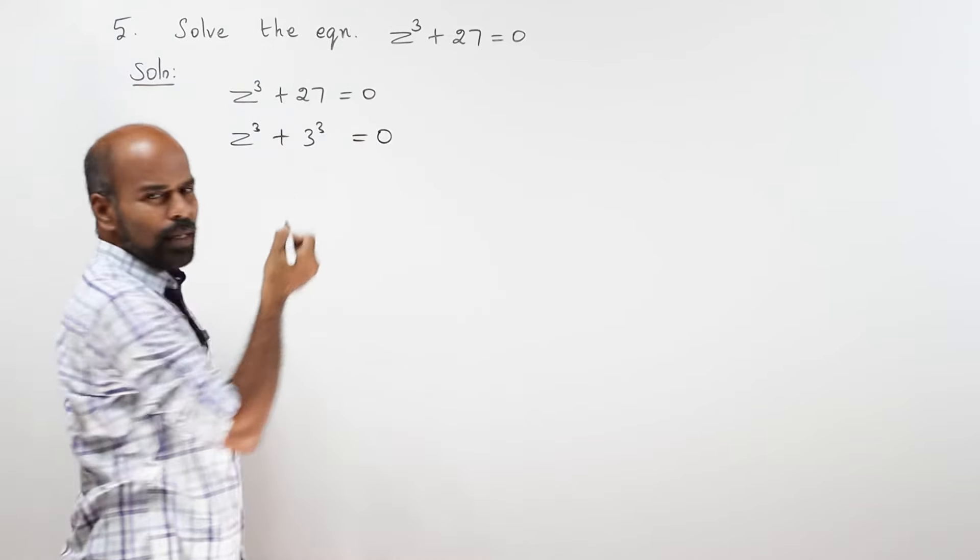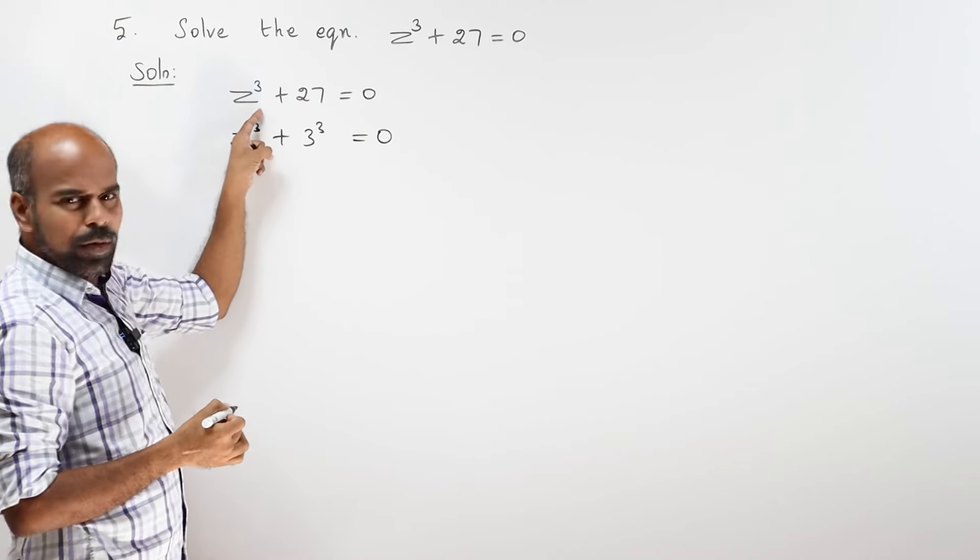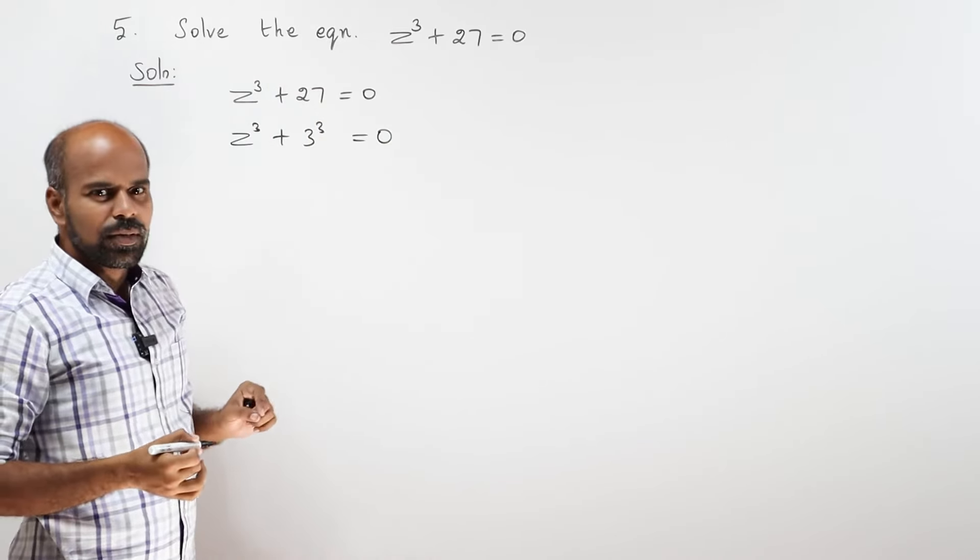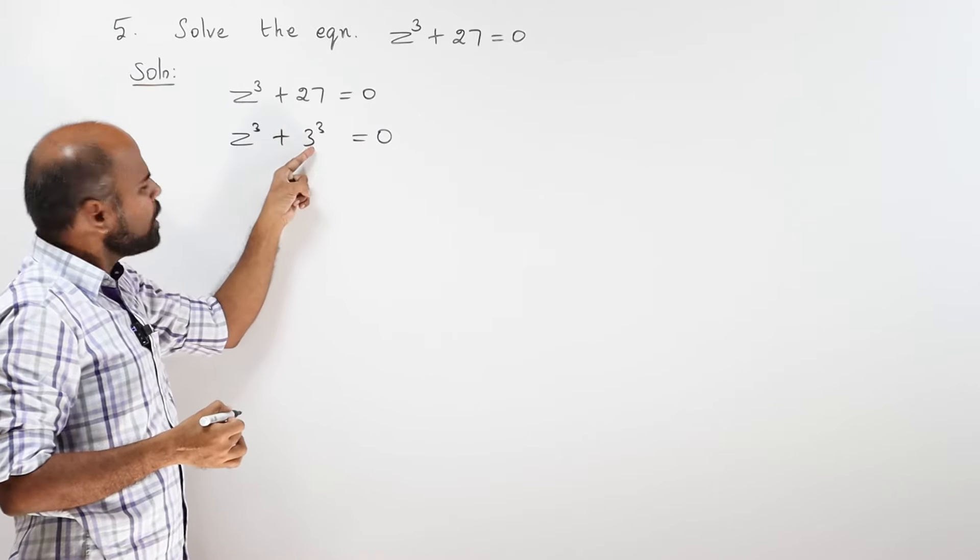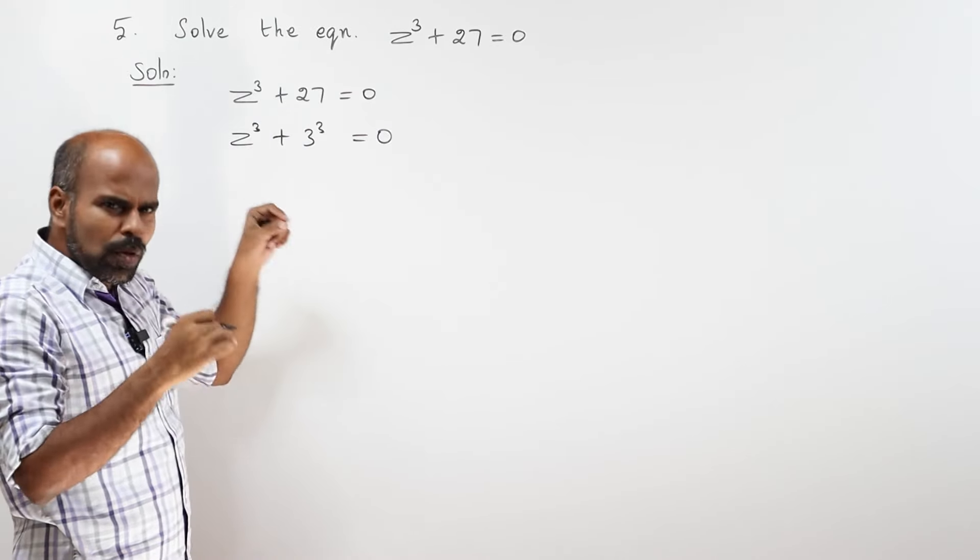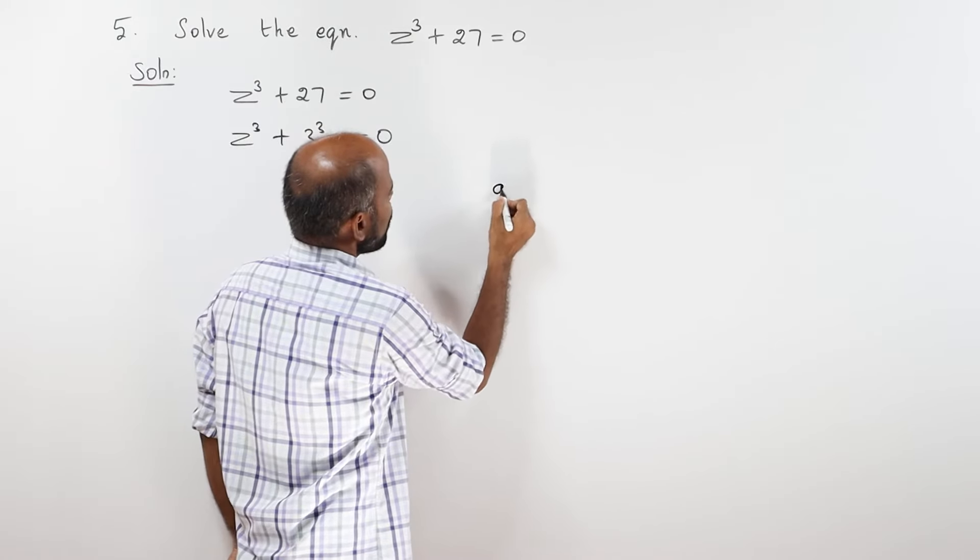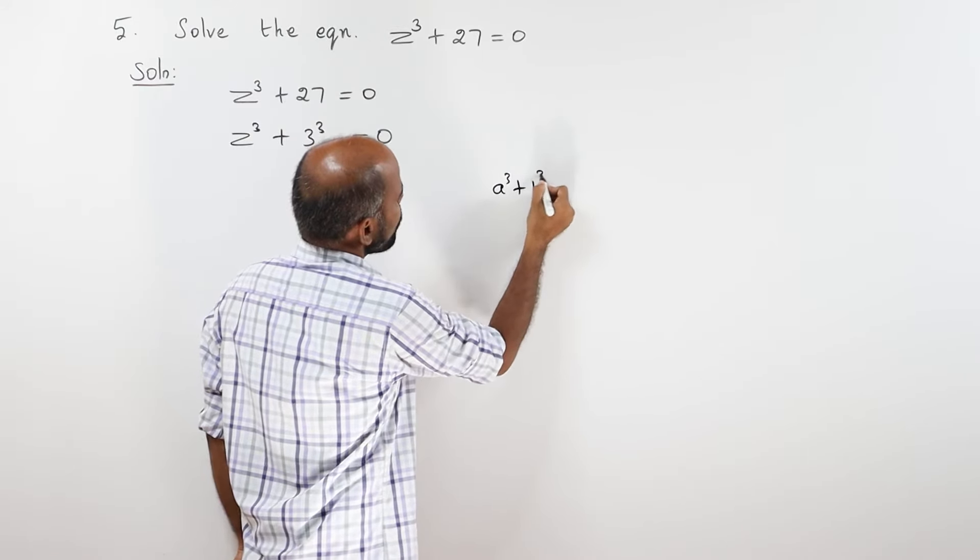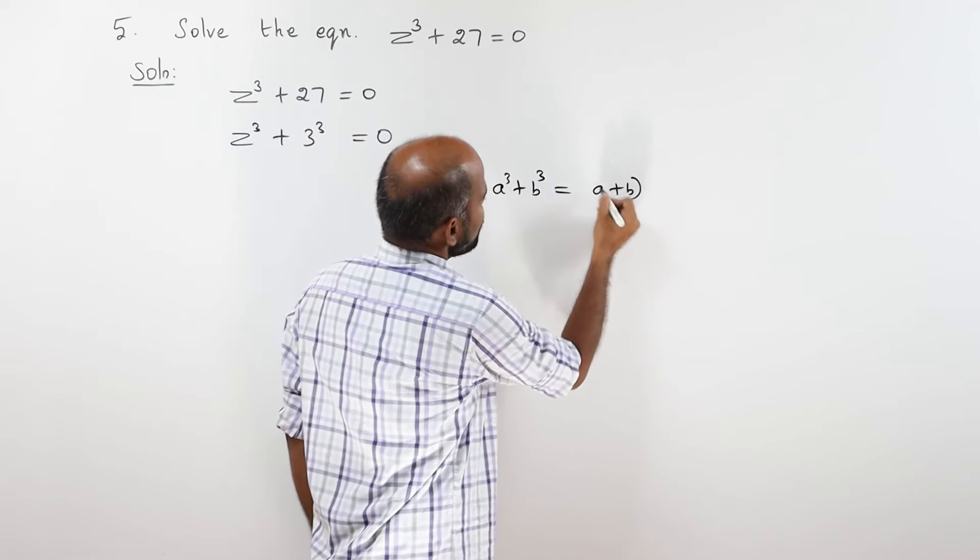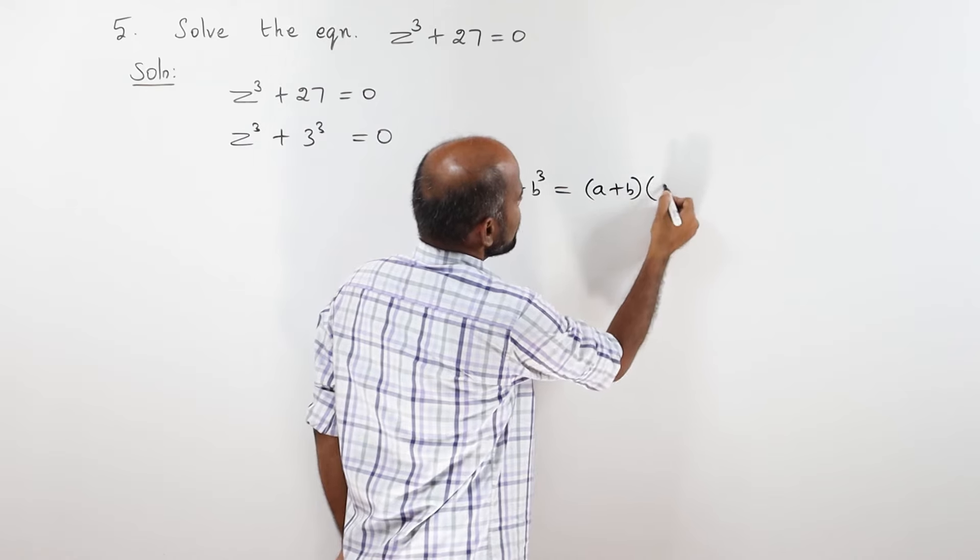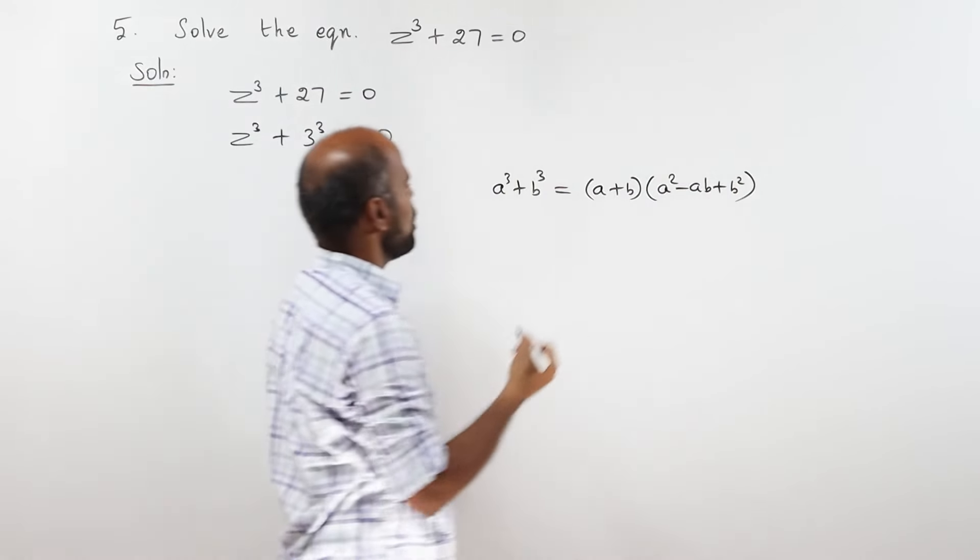Meaning, we simplify it. Now, what is the formula for a cube plus b cube equal to 0? We know the formula for a cube plus b cube. What is the formula for a cube plus b cube? It is nothing but a plus b into a square minus ab plus b square.